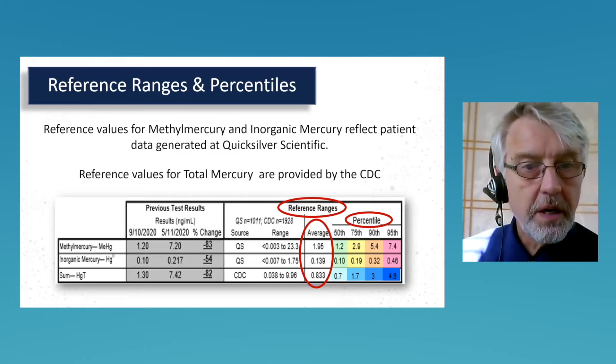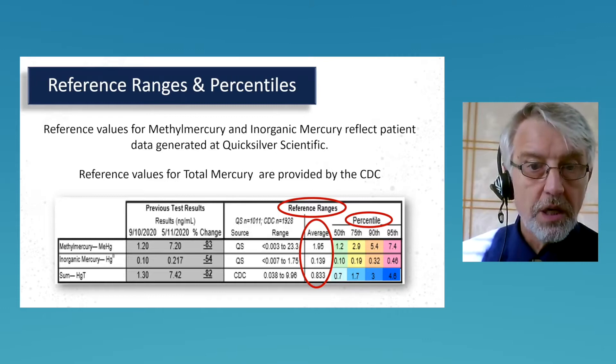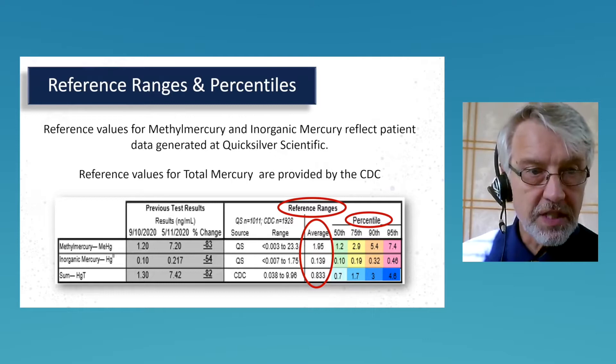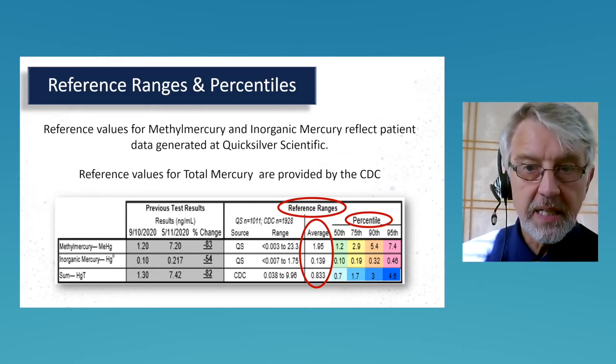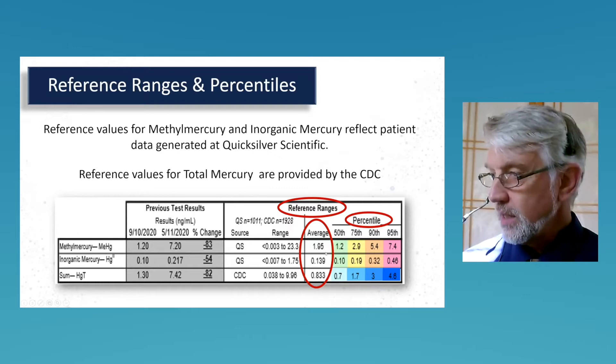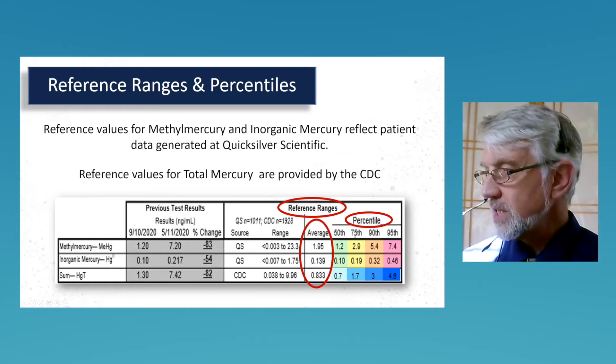On the front page table you'll see the reference ranges and percentiles highlighted in red. The reference values for methyl and inorganic mercury reflect patient data generated at Quicksilver Scientific. Reference values for total mercury are provided by the CDC. When you look at those averages, you can see they're very different for the two different species versus the total from the CDC. The percentile columns show the 50th, 75th, 90th, and 95th percentiles, represented by different colors.